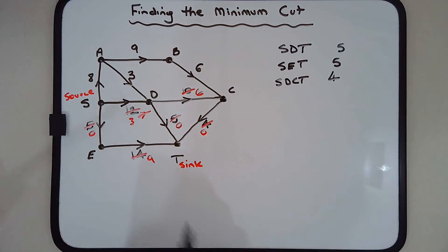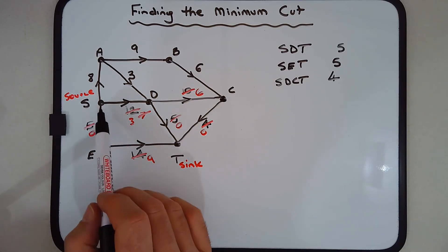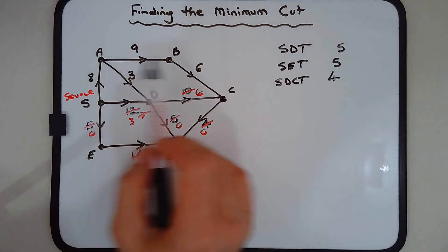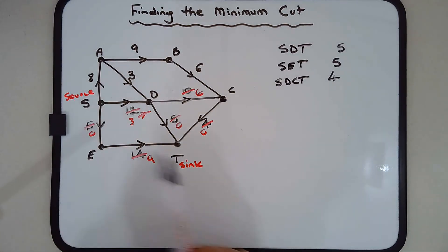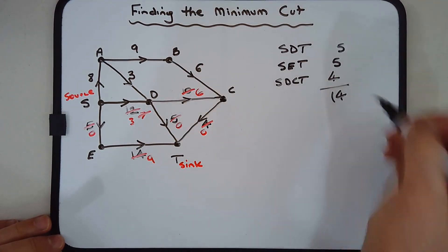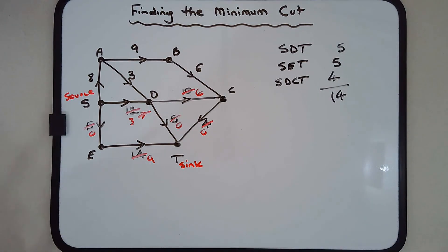Now looking at this network, there's no other way to get from S to T - if I go SADC or SAB there's still no way to get to T. So that's it: 5 plus 5 plus 4 equals 14. That is the maximum flow of this network, or the flow capacity.